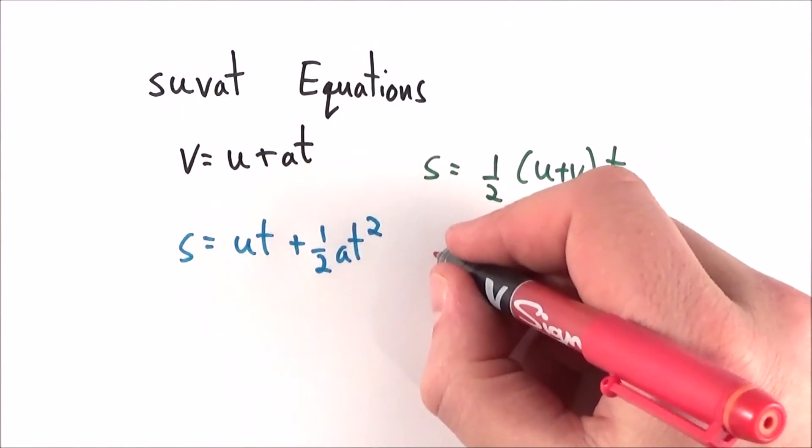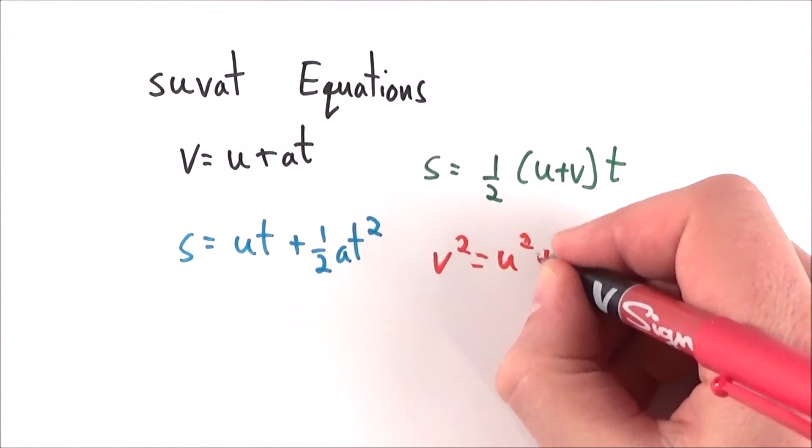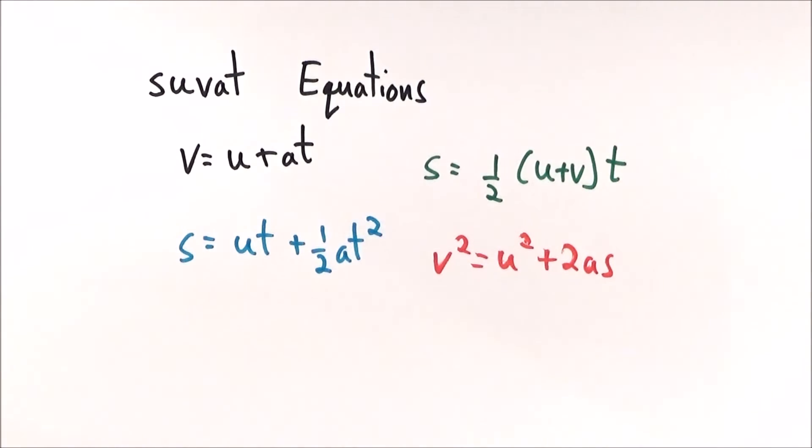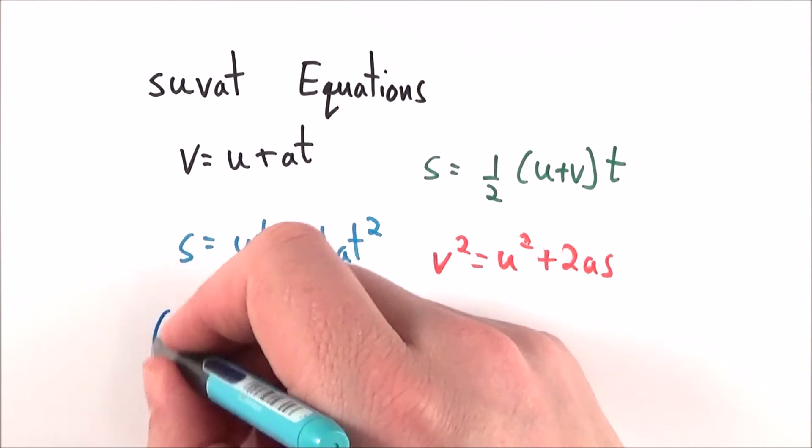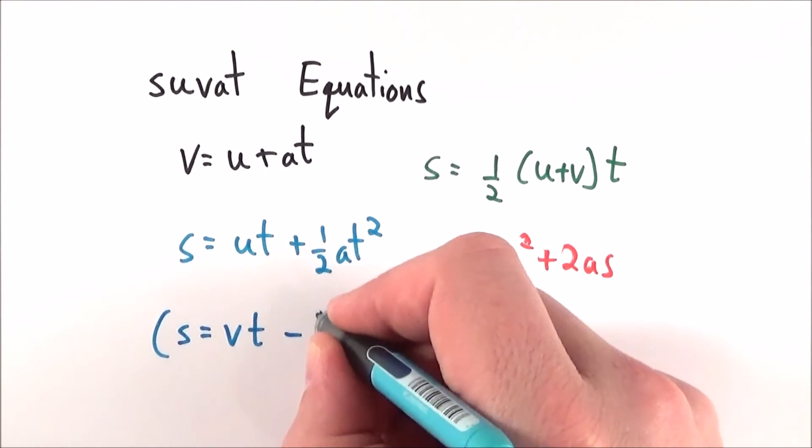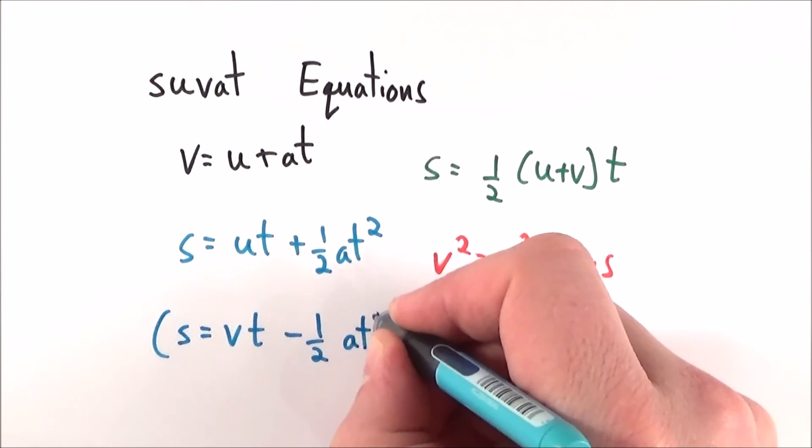Now, because we have five constants, there is a fifth equation we don't always use: s = vt - ½at².